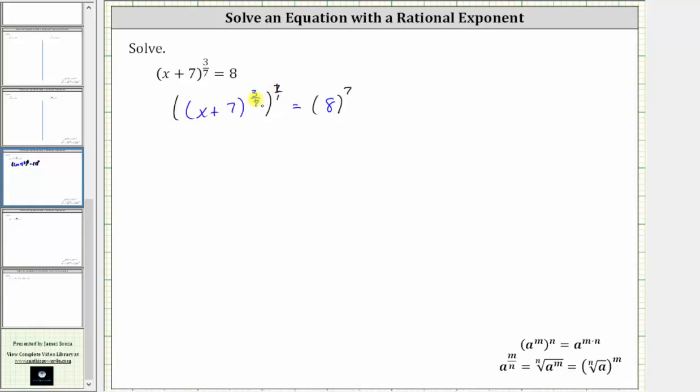This simplifies to one here and here. Multiplying the exponents, we have three times one or three, giving us the quantity x plus seven cubed.